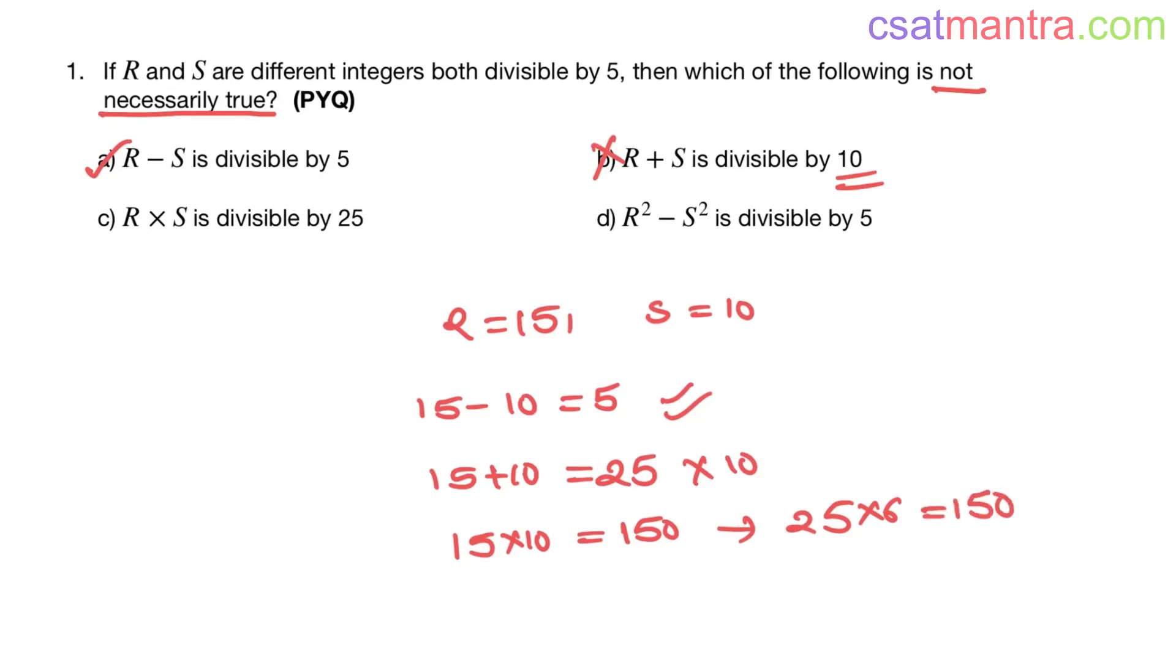R square minus S square, that is 15 square minus 10 square, which is equal to 25. 15 square is 225 and 10 square is 100, that is equal to 125. 125 is divisible by 5, so option C also true. Option D also true.